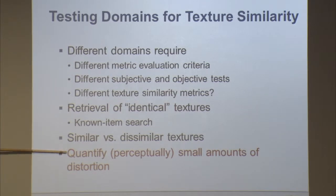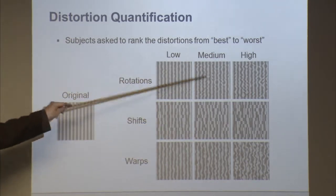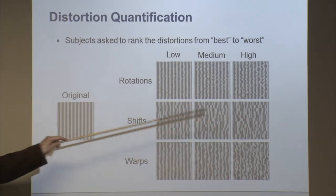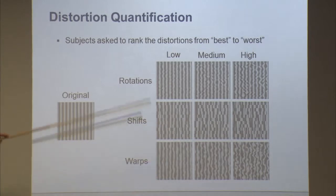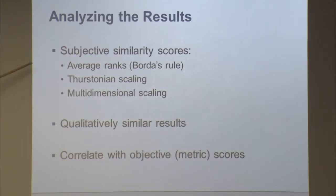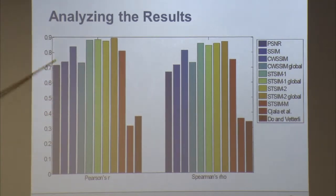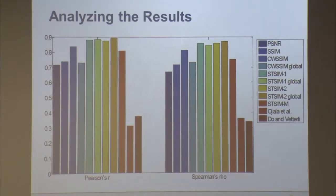Finally, especially for compression, we need to quantify small amounts of distortion. We created distortions of different types and different severities, asked people to evaluate them, then looked at how the results correspond with human perception. This involves psychophysical techniques like multidimensional scaling. Interestingly, PSNR does much better in this domain, and some metrics that performed better in the other domains are less effective here. Different problems require different metrics — but we have a systematic way to evaluate metrics in each domain.